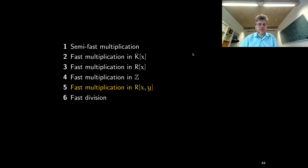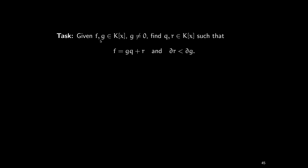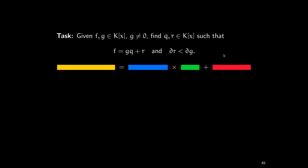That's all we did about multiplication, and now let's turn to division. Division means division with remainder. Given two polynomials f and g with g not zero, we want to find q and r such that f equals q times g plus r, where the degree of r is less than the degree of g. Here is an illustration of the standard algorithm. f, g, q, and r are labeled, and we want to compute q and r.